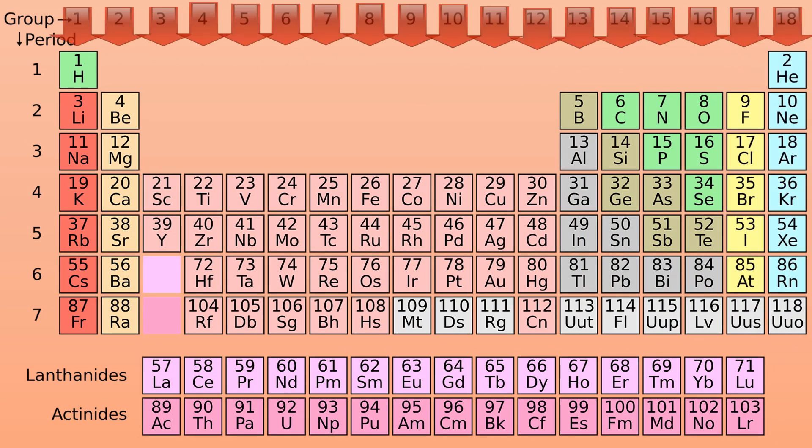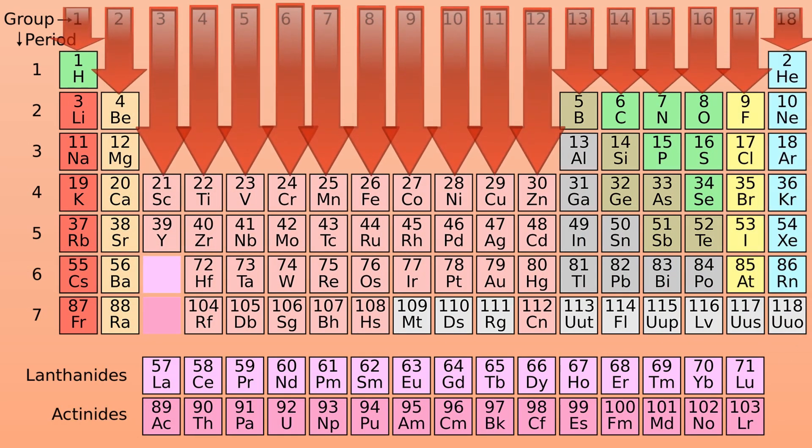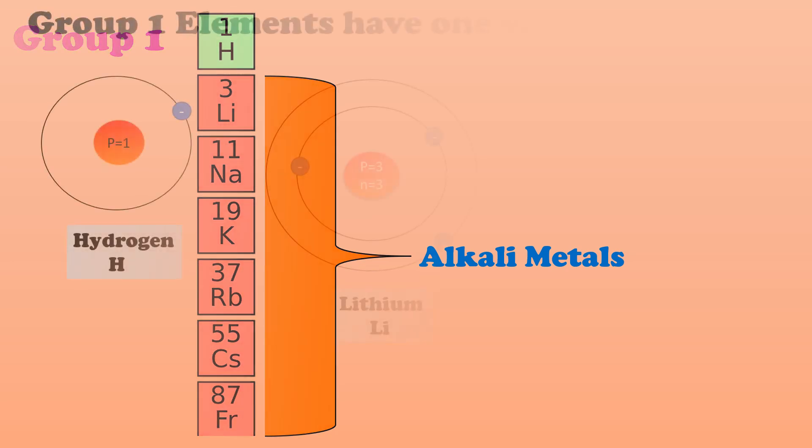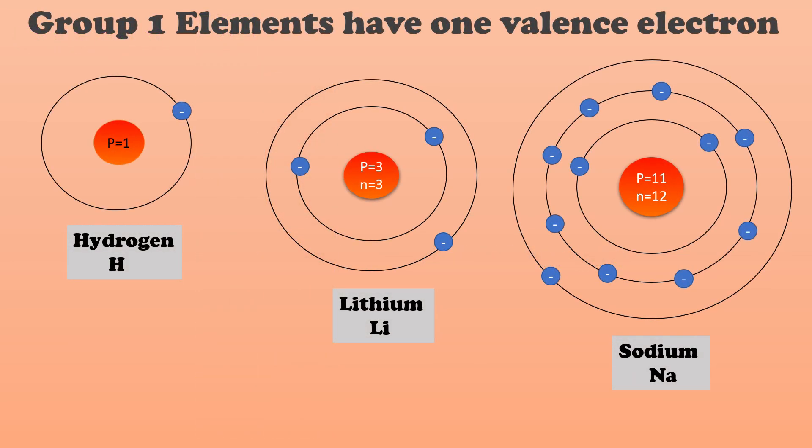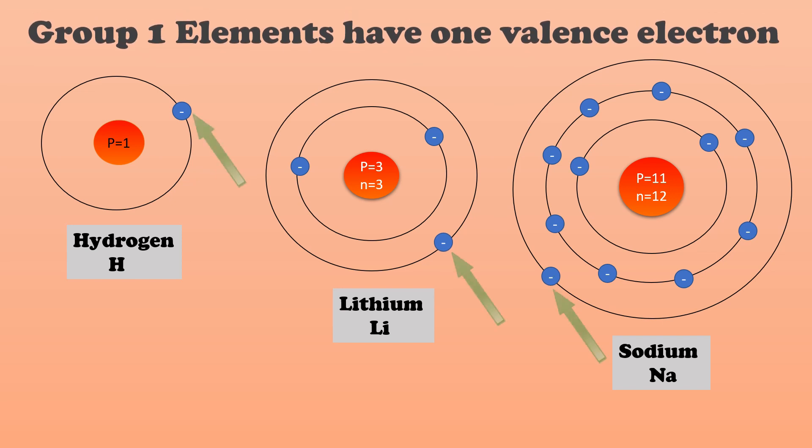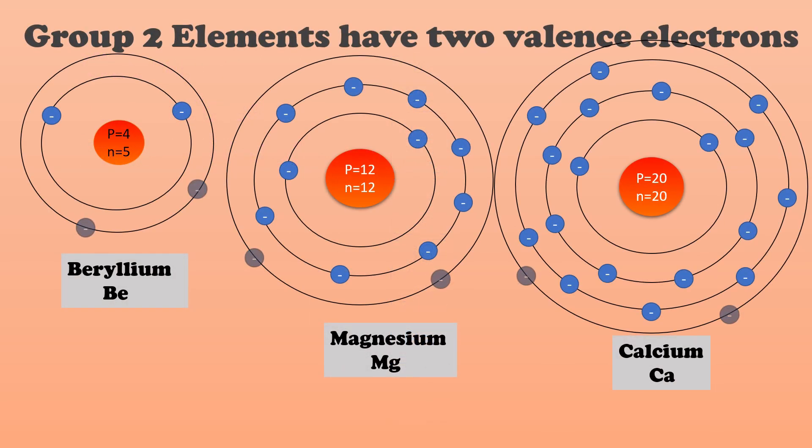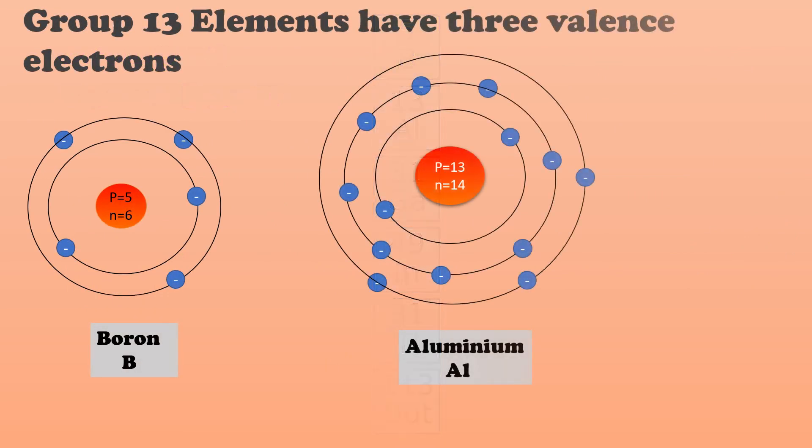The elements with similar chemical properties are arranged in 18 vertical columns called groups. Group 1 elements, except hydrogen, are alkali metals. All the group 1 elements have one valence electron. Valence electrons are the electrons in the outermost shell of an atom. Group 2 elements are known as alkaline earth metals and they have two valence electrons. Group 13 elements have three valence electrons. So from the group number of the element, we can have an idea of its valence electrons.